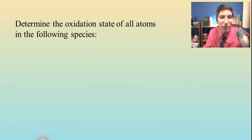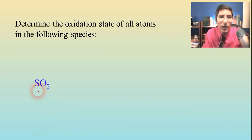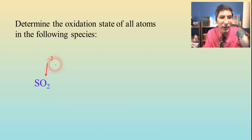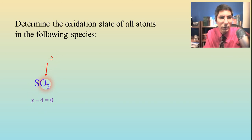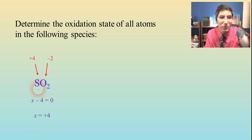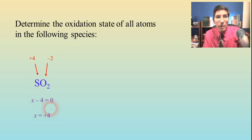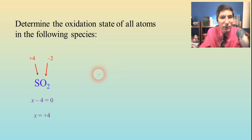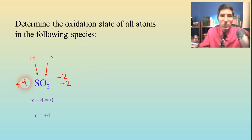Let's try a couple more examples. Determine the oxidation state of all atoms in the following species. Here we have sulfur dioxide — use what you know to figure out what you don't know. Oxygen is minus two; we don't know what sulfur is so we'll call that X. We have X minus four equals zero — because two oxygens at negative two would be negative four. So it looks like sulfur is positive four in this case. You might not have even needed the algebra — you could have just said two oxygens at minus two apiece means sulfur has to be plus four.